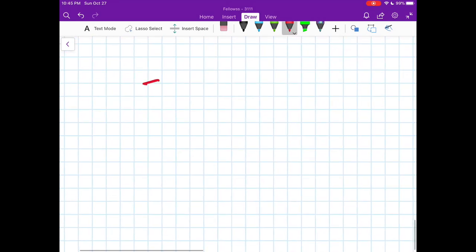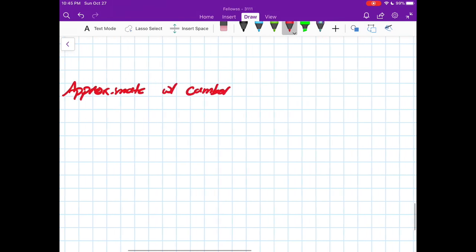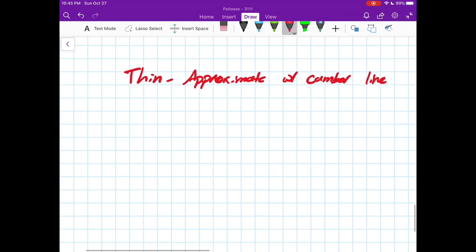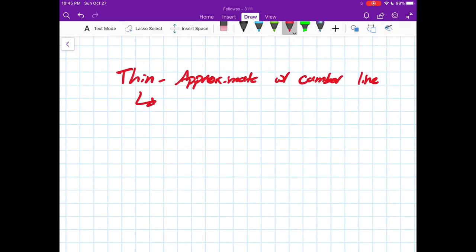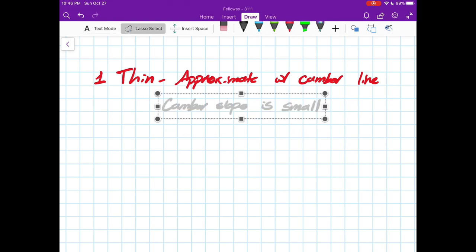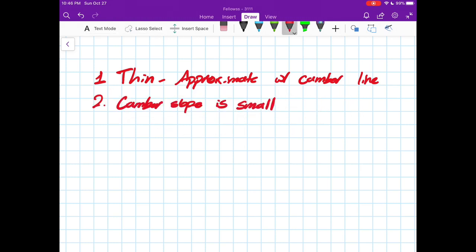Quick recap. So, thin airfoils, we approximate the camber line. And then we say camber slope is small. These are our two assumptions. So we can assume it's thin, and we call it thin airfoil theory, so that sounds appropriate. And then the secondary thing is that we assume the camber slope is small.